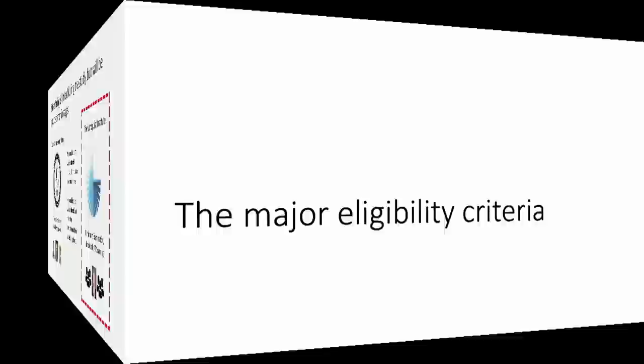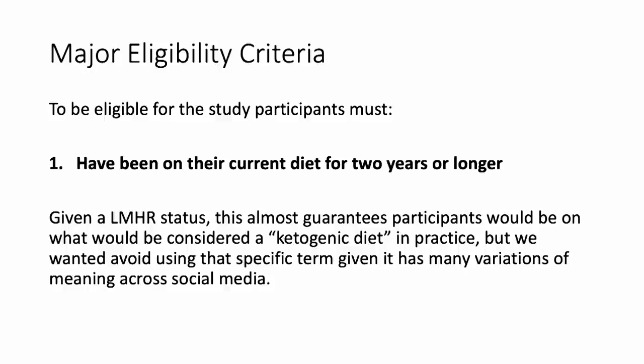Finally, the major eligibility criteria. Let me emphasize that while many of you already know the cut points for lean mass hyper-responders as I've defined them before, we've actually relaxed them just a little bit, so it's actually even a little bit easier to get into this study. To be eligible, participants must first have been on their current diet for two years or longer. Given lean mass hyper-responder status, this almost guarantees participants would be on what would be considered a ketogenic diet in practice, but we want to avoid using this specific term given it has many variations of meaning across social media.